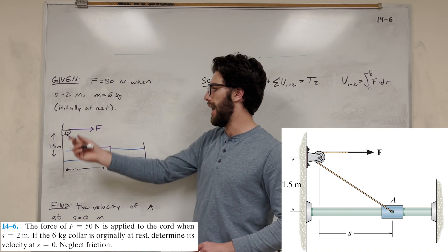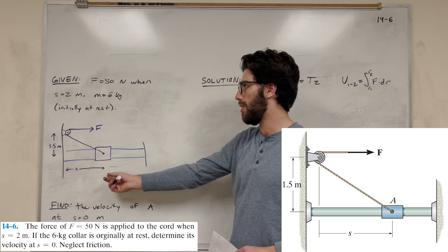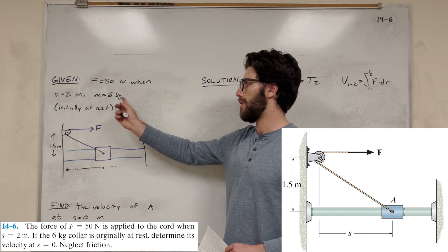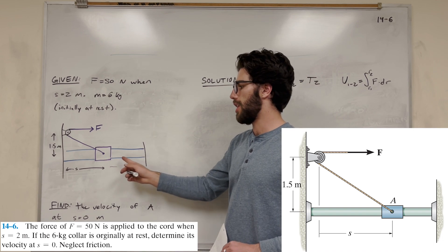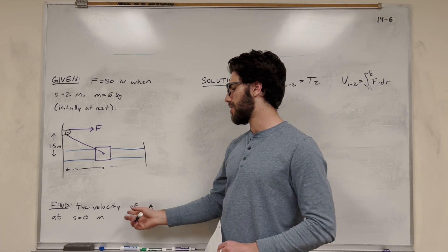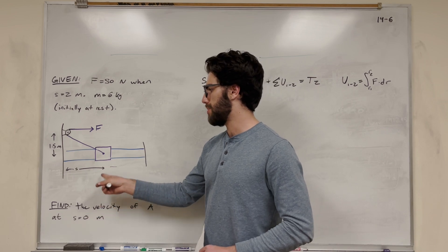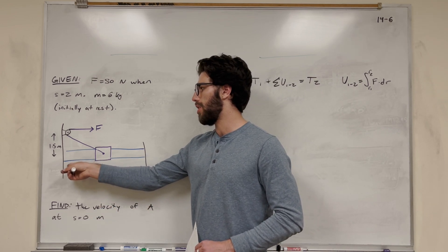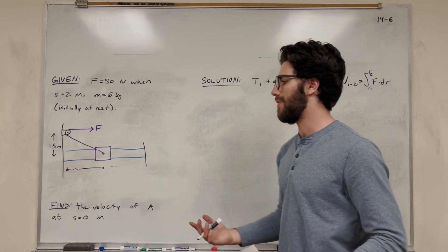We're initially at rest. Our s, which is the distance away from the wall, is 2 meters. We know the mass is 6 kilograms. We're trying to find the velocity of A once s becomes 0. So basically, when the block is all the way against the wall, what is the velocity of A?